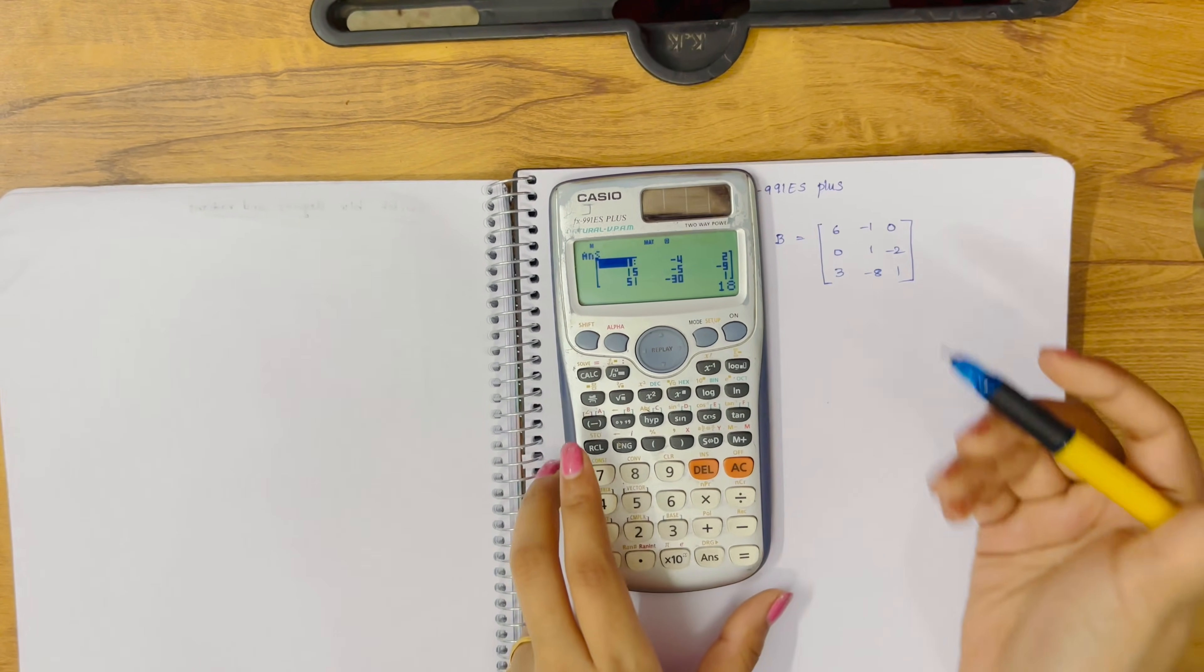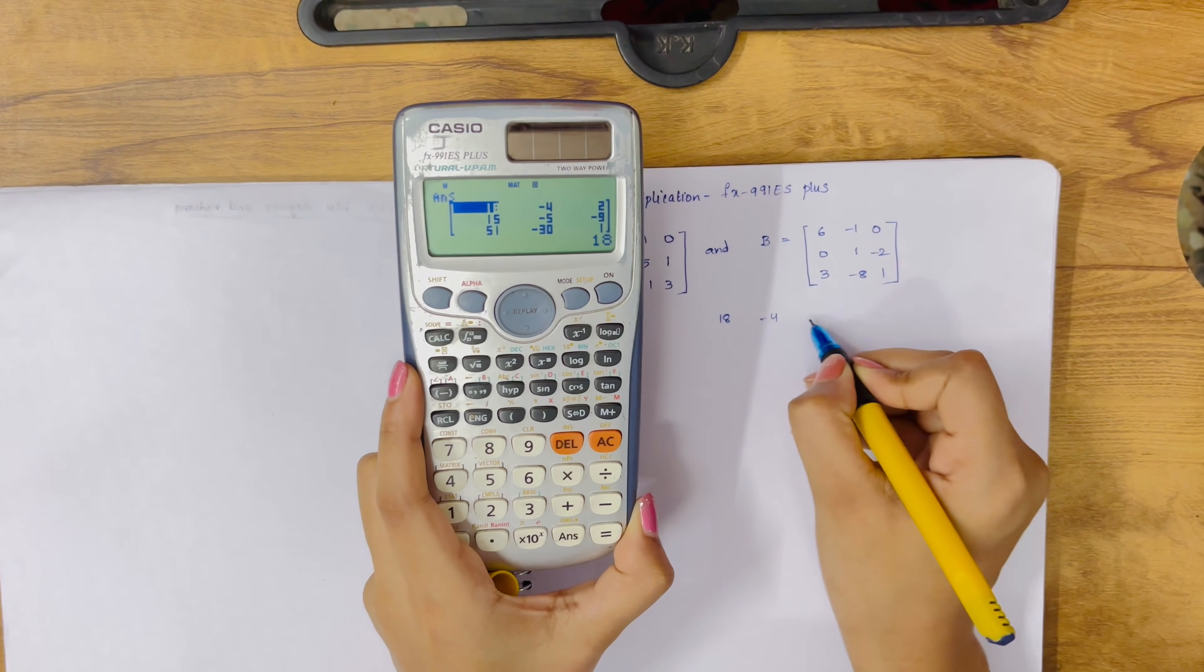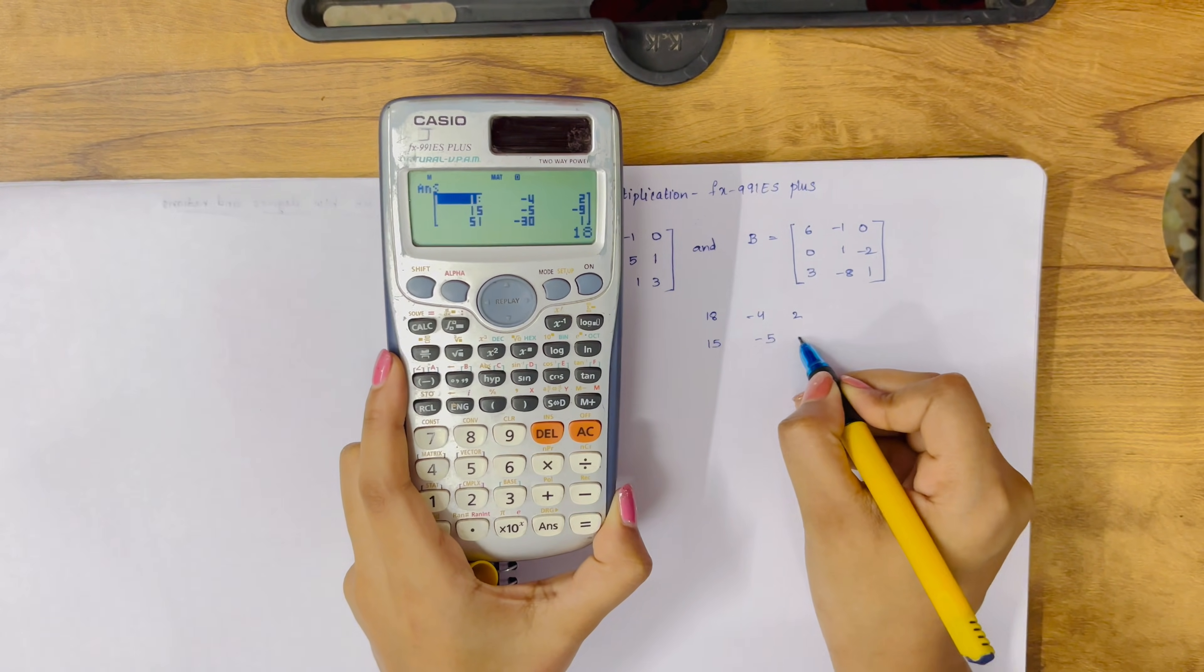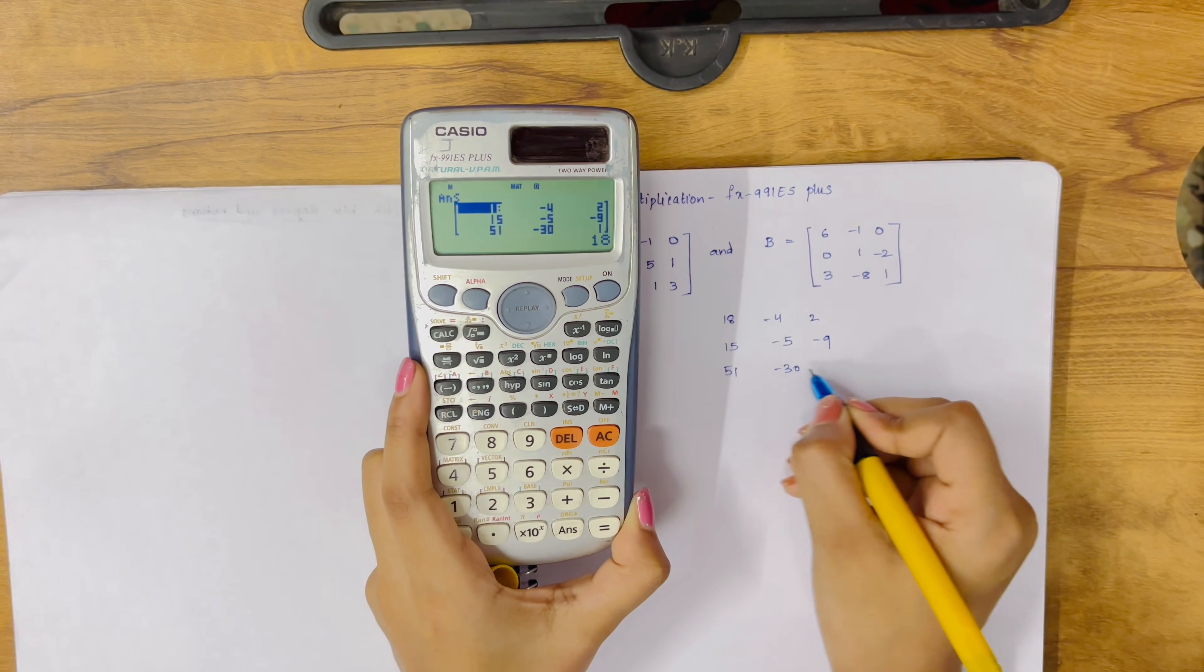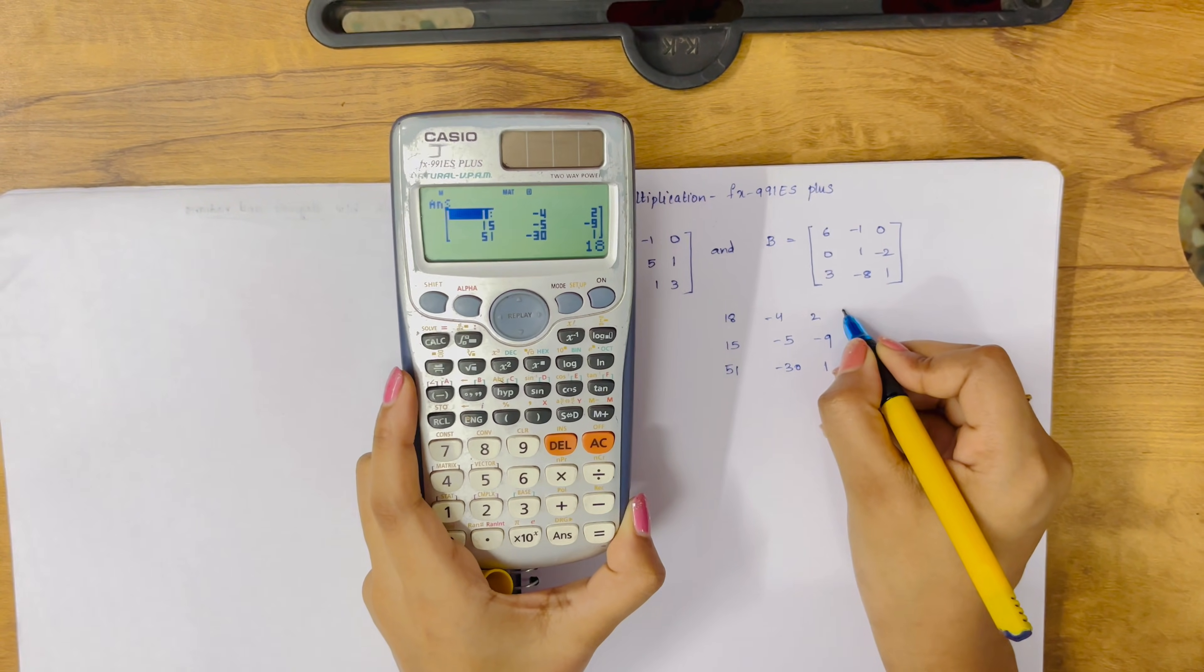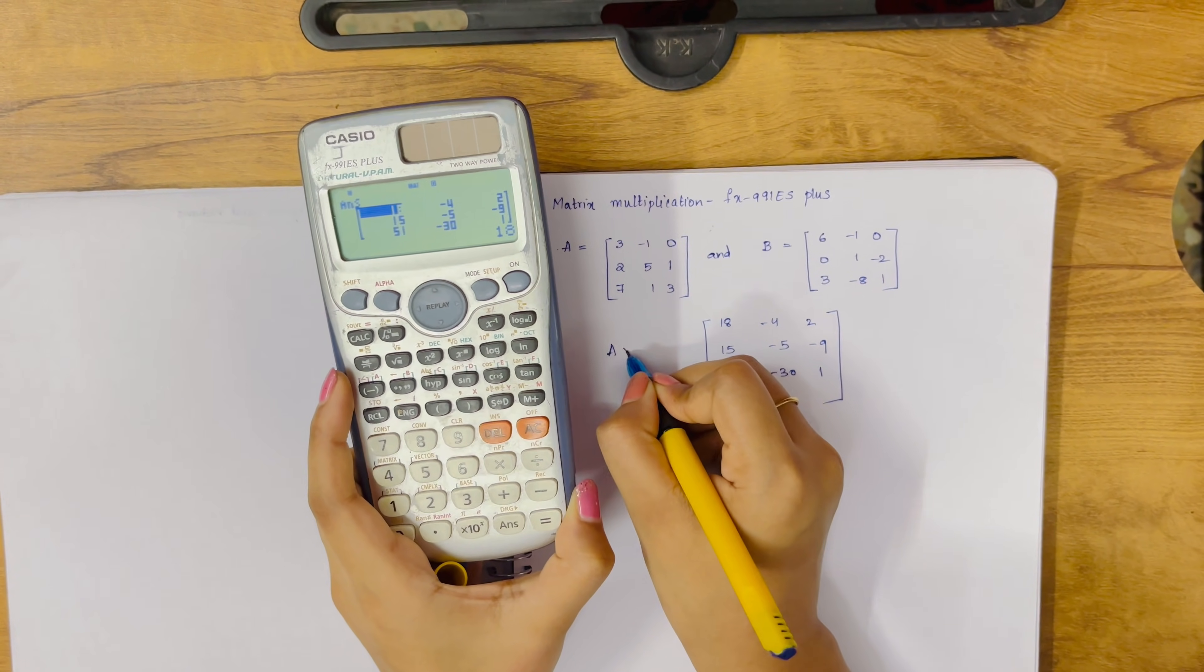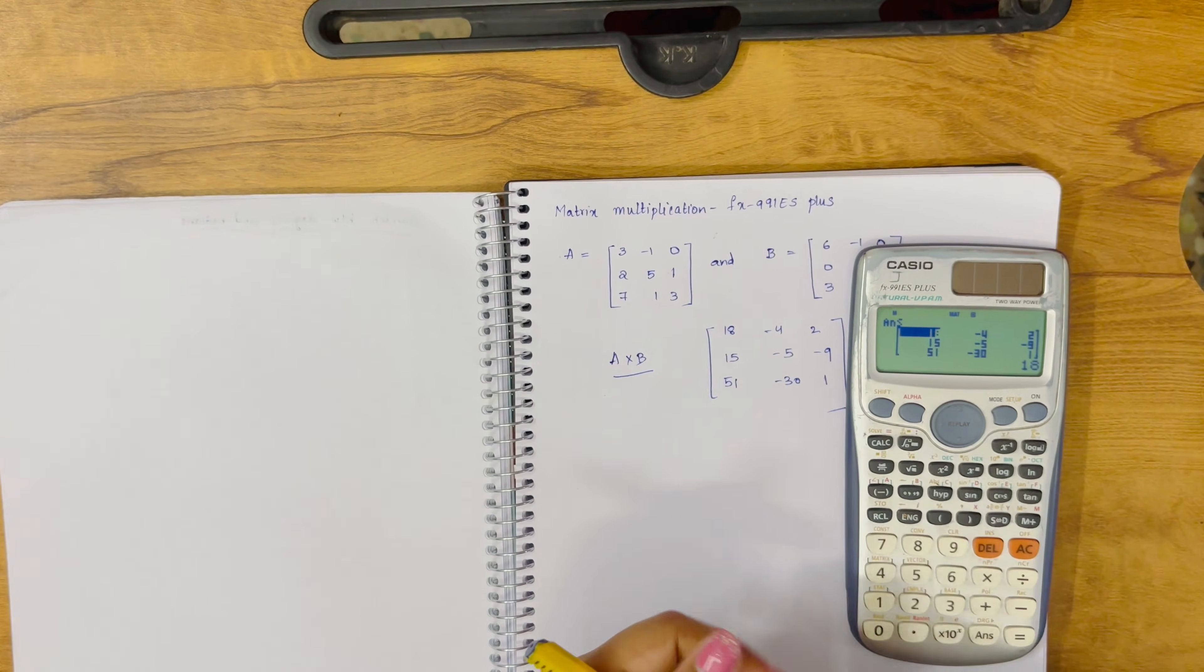Click equals. We got the value here: 18, -4, 2, 15, -5, -9, 51, -30, and 1. So this is our Mat A into Mat B calculation. That's all guys, thank you for watching.